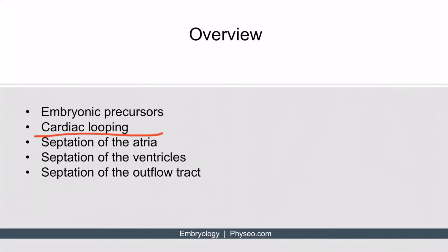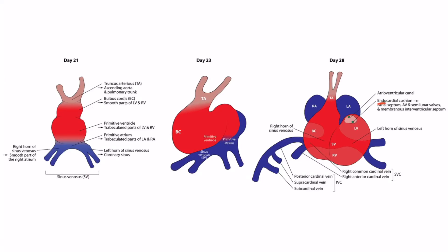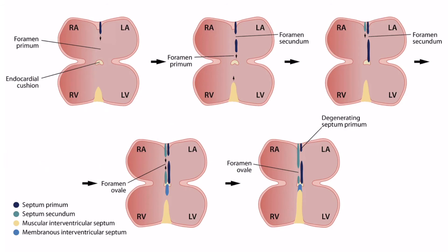Now let's transition and discuss septation of the atria and ventricles. Remember the endocardial cushions? This is where all the magic happens, so let's take a frontal section through this portion of the heart while we discuss septation. Here we can see inside of the atria and ventricles, allowing us to better see the septae that are forming. We will be discussing the septum primum, septum secundum, muscular interventricular septum, and membranous interventricular septum.